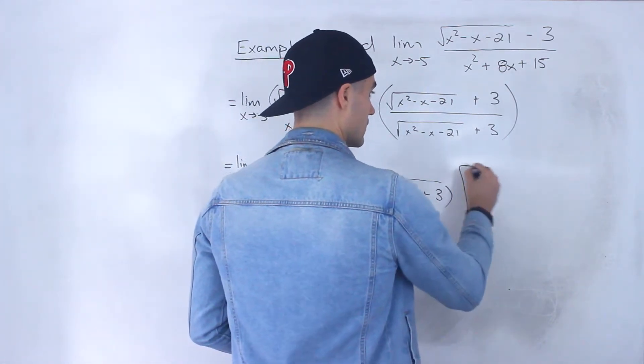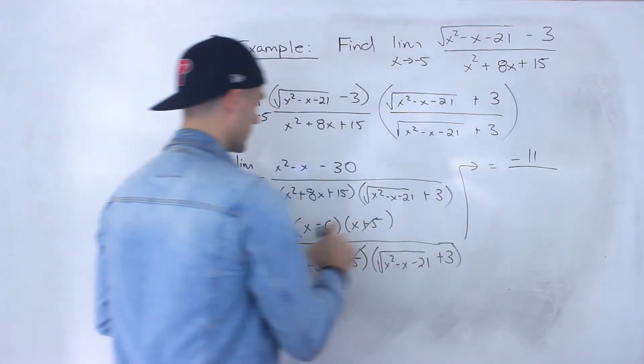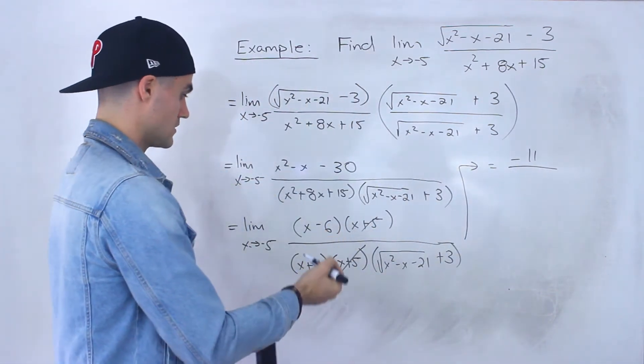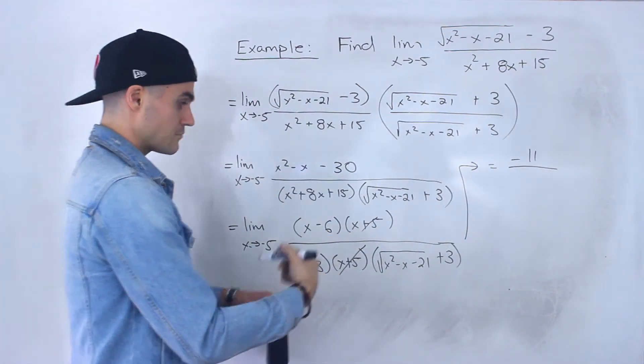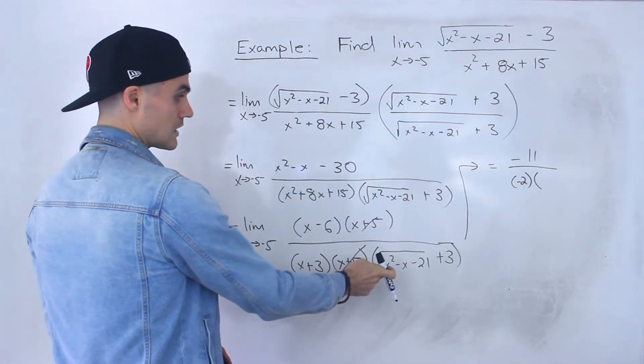So if we do that, we would end up with negative 11 up top, right, negative 5 minus 6 is negative 11. Negative 5 plus 3 would give us negative 2.